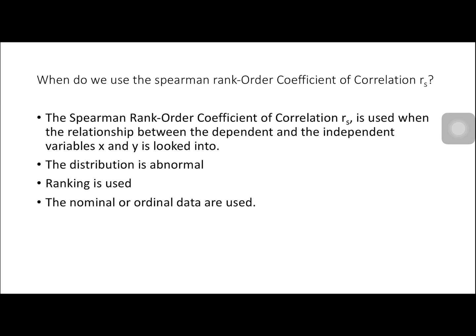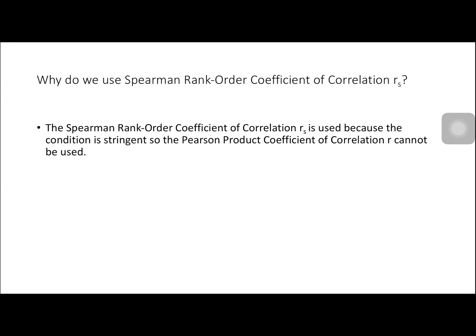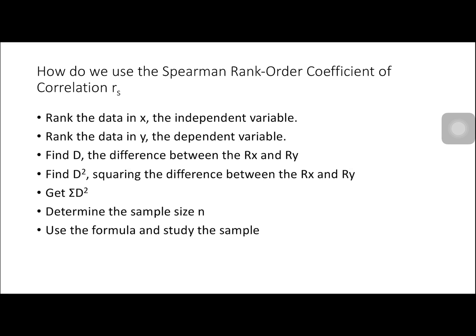We use ranking when the distribution is not normal. Normal, nominal, or ordinal data are used. RS is used when the Pearson Product Moment Coefficient of Correlation cannot be used because the conditions are not that stringent.